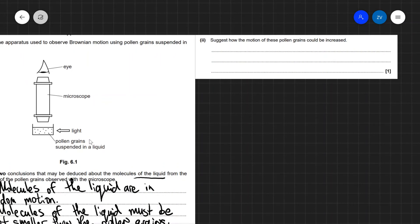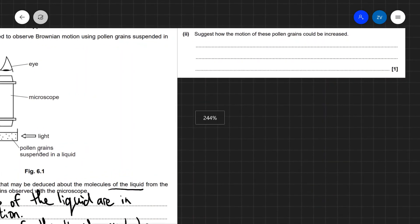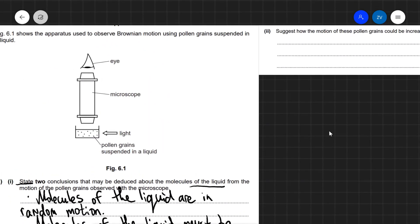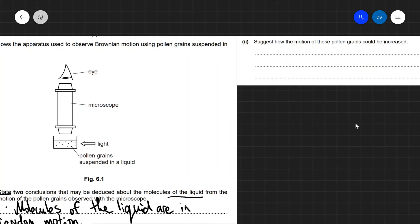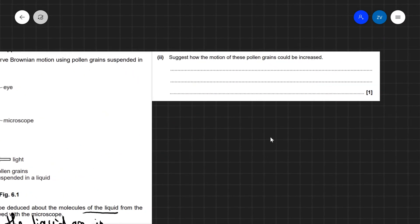Well, the only way that really you could increase the average speed at which those pollen grains are moving would be to increase the temperature of the liquid. So if you heat this up, for example, you can have a flame underneath or something of that nature, you will be able to increase the motion of these pollen grains.